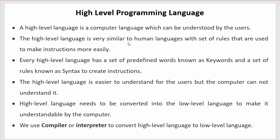The second point is that high-level language is very similar to human language, with a set of rules that are used to make instructions more easily. A high-level language is almost similar to any human language like English or Hindi or any other language we use to communicate. In any human language we have some set of rules or grammars, and before speaking a language we first learn its grammar and rules. Exactly the same way, if you want to learn any high-level programming language — like C, C++, Java, or PHP — you must know the rules and syntaxes of that particular language.